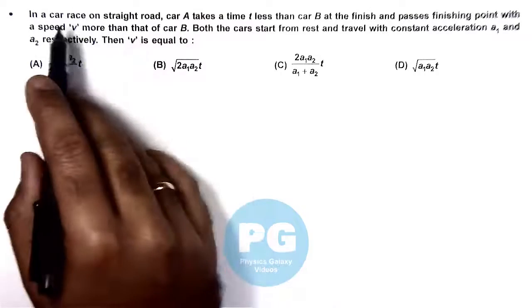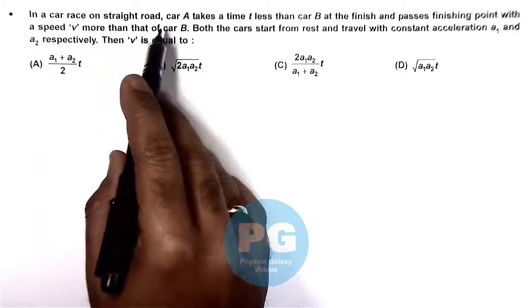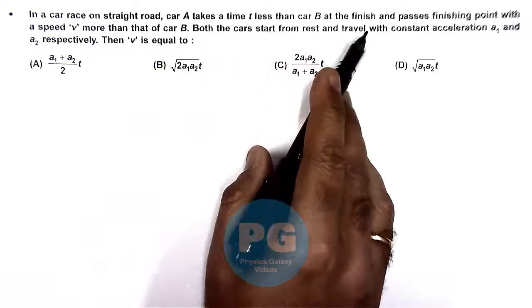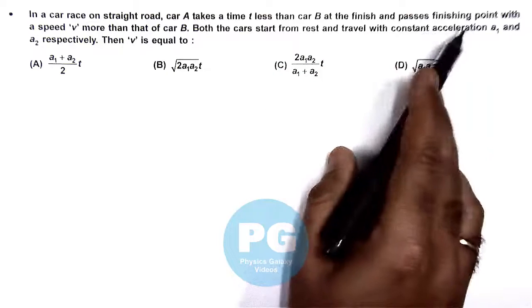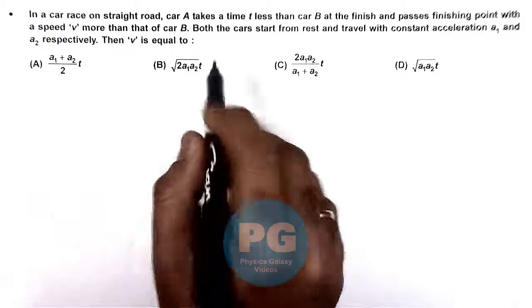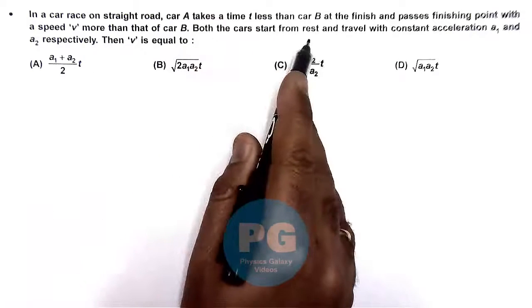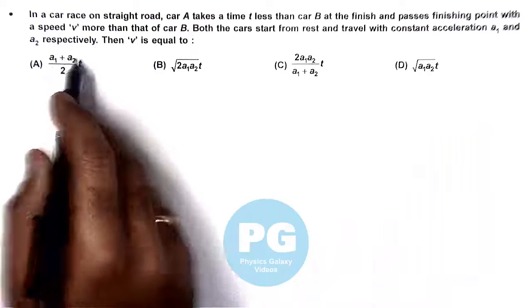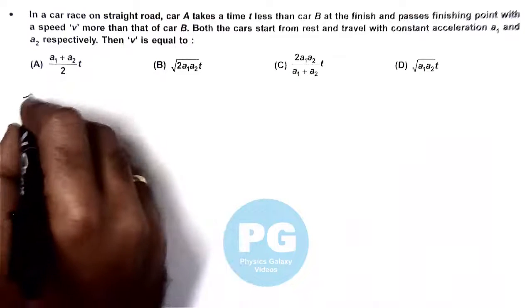In this question we are given that in a car race on a straight road, car A takes a time T less than car B at the finish and passes finishing point with a speed V more than that of car B. Both the cars start from rest and travel with constant acceleration a1 and a2 respectively. And we are required to calculate the value of V.